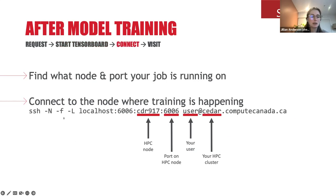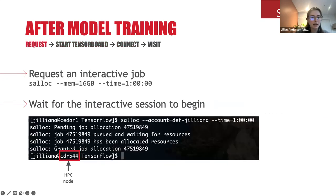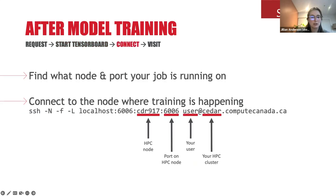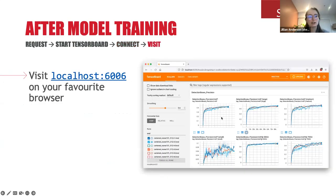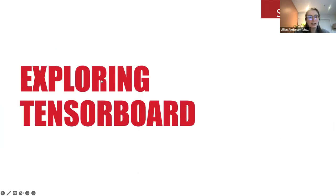Once you have your node and port, you use exactly the same SSH command to do the port forwarding. In our case, 6006 is right, but the node is now cdr544. Update the SSH command accordingly, run it, input your password to establish the connection, and then visit localhost:6006 in your browser. That's where we can actually start exploring TensorBoard.